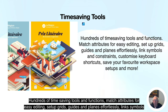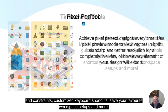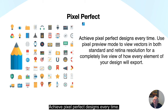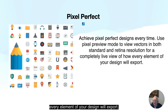Hundreds of time-saving tools and functions: match attributes for easy editing, set up grids, guides and planes effortlessly, link symbols and constraints, customize keyboard shortcuts, save your favorite workspace setups, and more. Achieve pixel-perfect designs every time using pixel preview mode to view vectors in both standard and retina resolutions for a completely live view of how every element of your design will export.